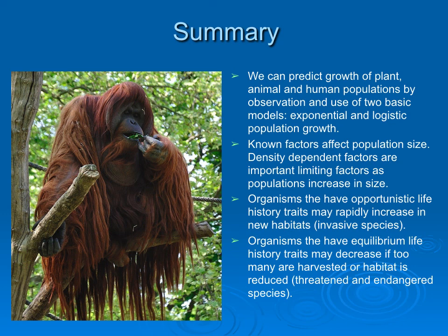In summary, we can predict growth of plant, animal, and human populations through observation and the use of two basic models: exponential and logistic population growth. Known factors affect population size — density-dependent factors are important in limiting populations as their size increases. Organisms with opportunistic life history traits may rapidly increase in new habitats and have great potential to become invasive. Organisms with equilibrium life history traits may decrease if too many are harvested or habitat is reduced, with potential to become threatened or endangered species where the whole population might crash.